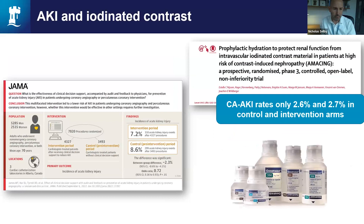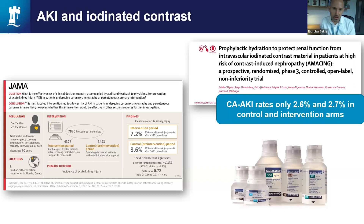Contrast-associated AKI is also an area that still causes a lot of clinical concern, but the thinking has shifted significantly. This slide shows two examples of randomised trials of interventions to reduce the incidence of contrast-associated AKI — on the left with coronary angiography, and on the right predominantly with IV contrast for CT scanning. Importantly, the low rates of acute kidney injury even in higher risk groups are notable. There is also risk in not performing a diagnostic test or vascular intervention, and that balance of risk is now much more in favour of giving contrast if it's clinically indicated.